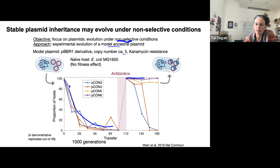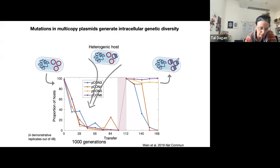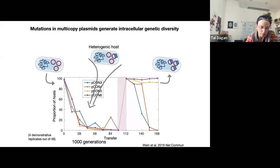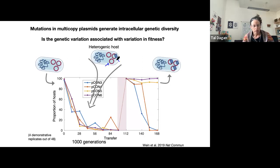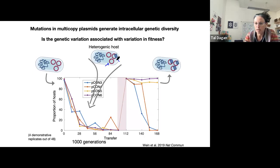So we show evidence for evolution of plasmid stability, or stable plasmid inheritance, under non-selective conditions. Now, if you think about what happened during this experiment, a segmental duplication occurred in the plasmid, so we would picture heterogenic hosts that include both plasmid types — the ancestral one and the evolved one with the segmental duplication. Our next question was: is this genetic variation in the plasmid genome indeed associated with variation in fitness of the plasmid? We had a preliminary answer but could ask this in a much more direct fashion.